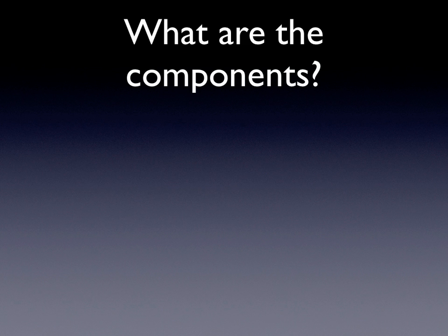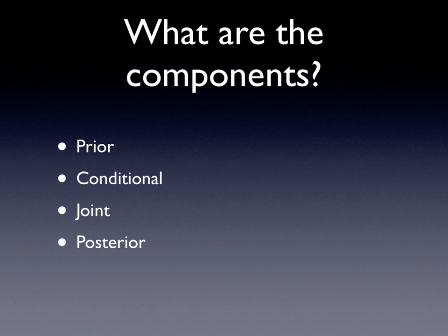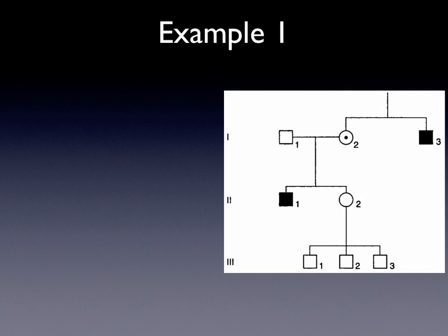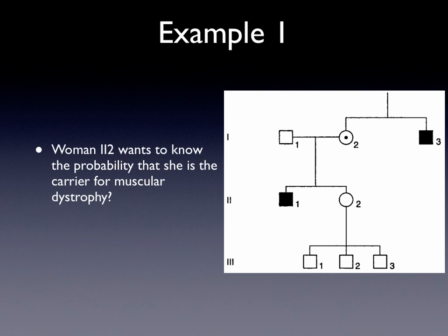There are four components to Bayes Theorem: the prior, the conditional, joint, and the posterior. I'll explain these as we go along through our practice problem with example one.